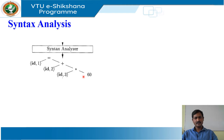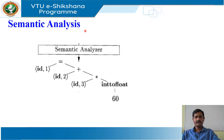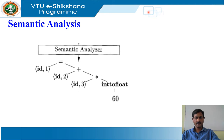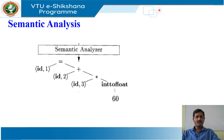The subsequent phases of the compiler use the grammatical structure to help analyze the source program and generate the target program. The semantic analyzer uses the syntax tree and the information in the symbol table to check the source program for semantic consistency with the language definition. It also gathers type information and saves it in either the syntax tree or the symbol table for subsequent use during intermediate code generation.